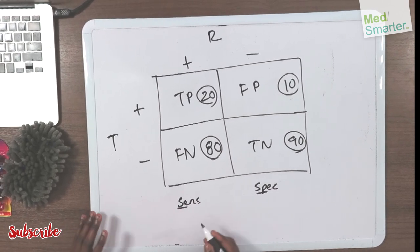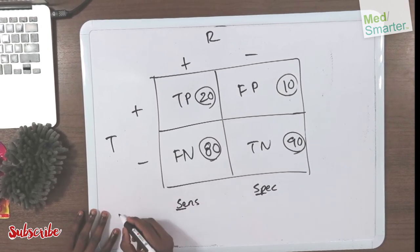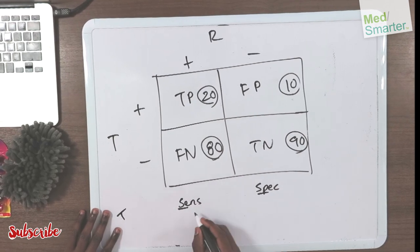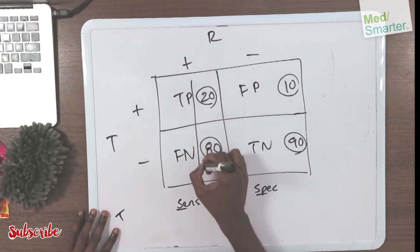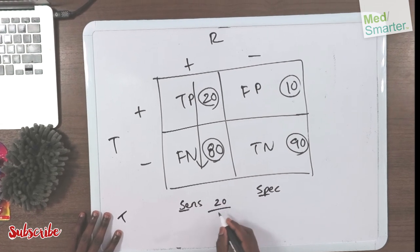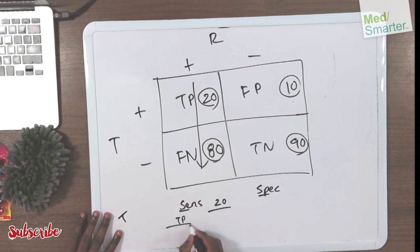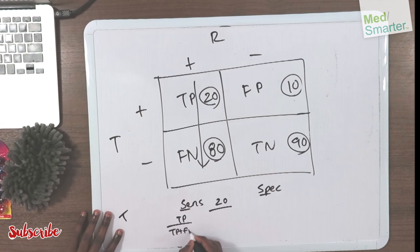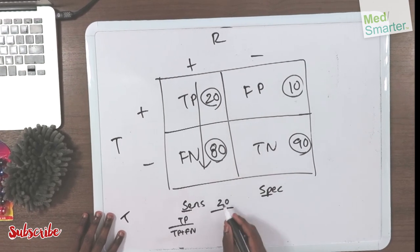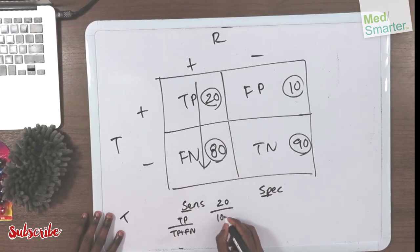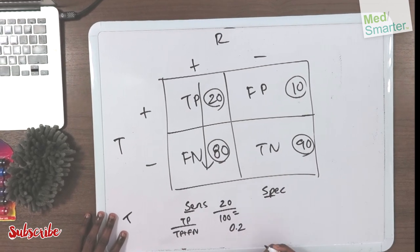When you see sensitivity, remember the trues go on top. You come straight down. So it's true positive divided by true positive plus false negative. So it's 20 divided by 20 plus 80, which is 100. Therefore it equals 0.2.